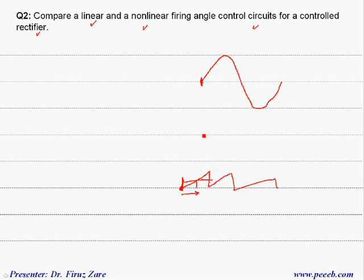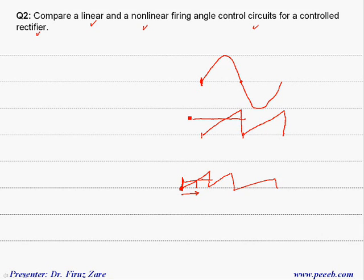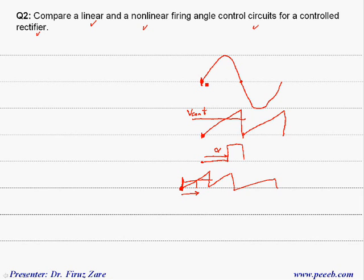We need to synchronize a sawtooth with respect to the zero crossing. In a linear circuit, when we have a sawtooth, we generate it with respect to these zero crossing points. So when we compare a DC voltage or control signal with this sawtooth and then generate a pulse, it is synchronized with respect to this zero crossing point, and based on this pulse we define the firing angle.